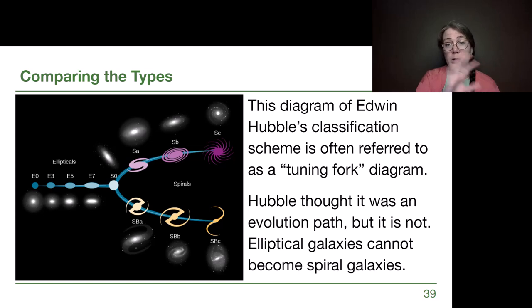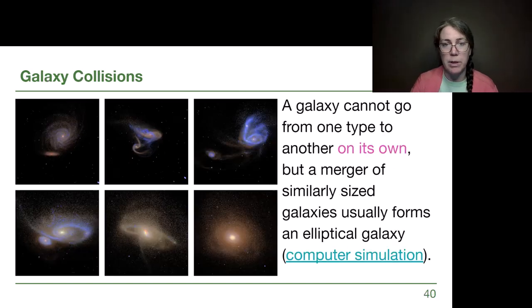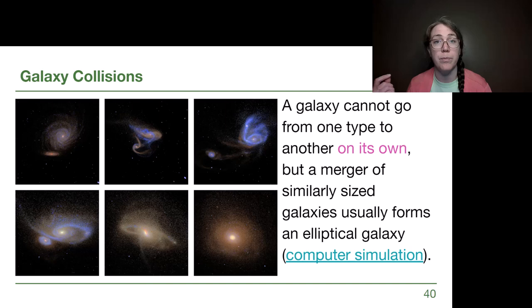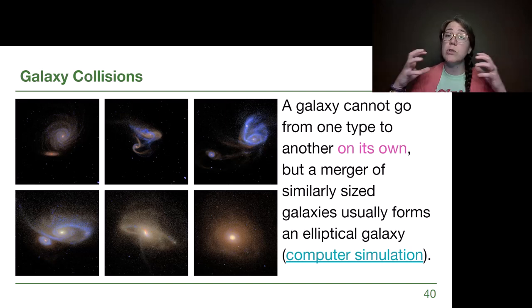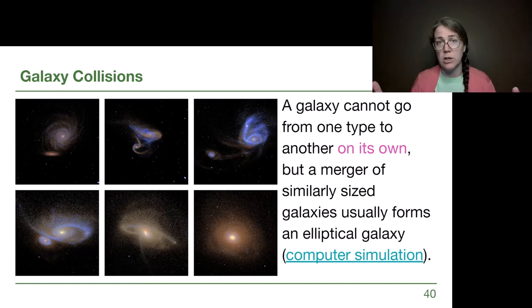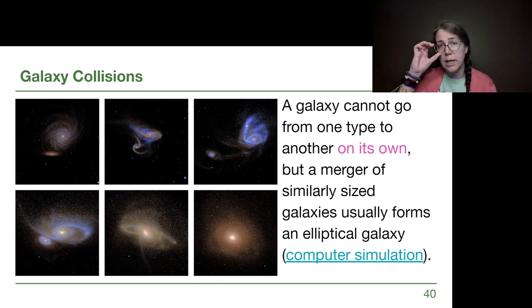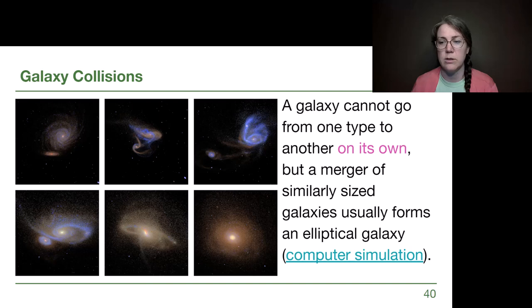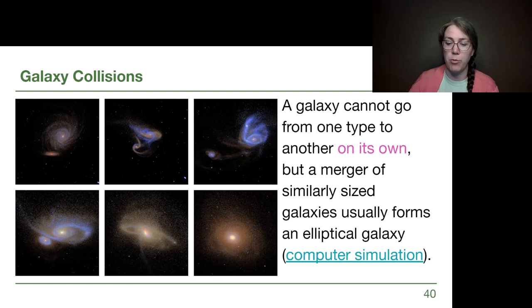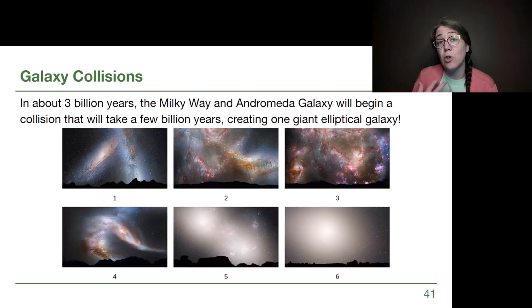Rather than Hubble's assumption that galaxies evolve from ellipticals to spirals, the most common change that happens is a major merger — two similarly sized galaxies, whether two ellipticals, two spirals, or a spiral and elliptical. When two similar-sized galaxies merge together, they often lose any structure they had and form a giant elliptical galaxy. There's a link in the posted slides to a computer simulation that I encourage you to watch on your own.